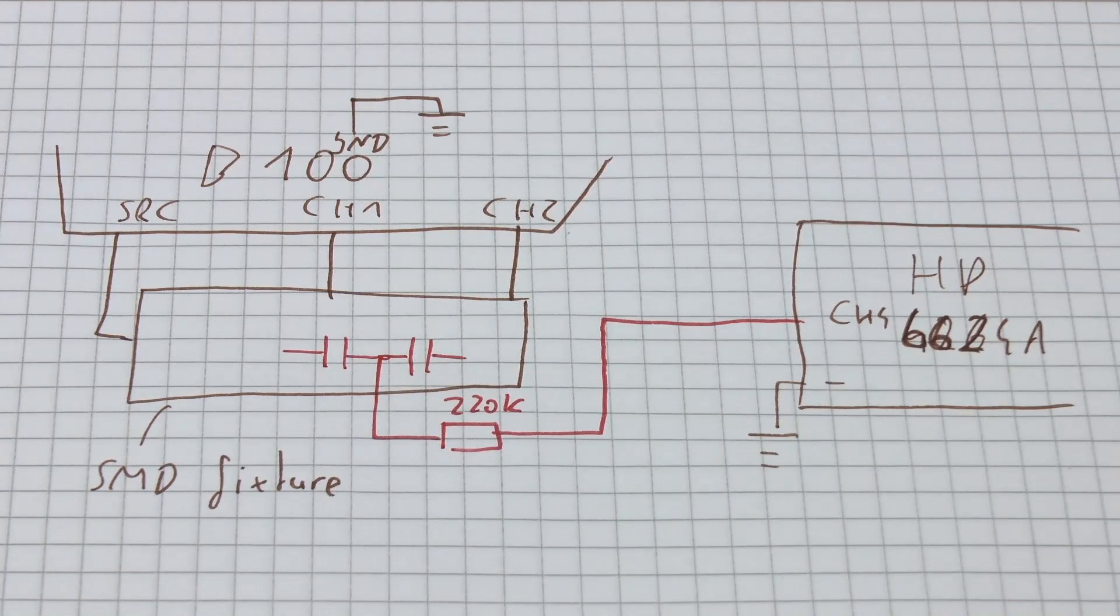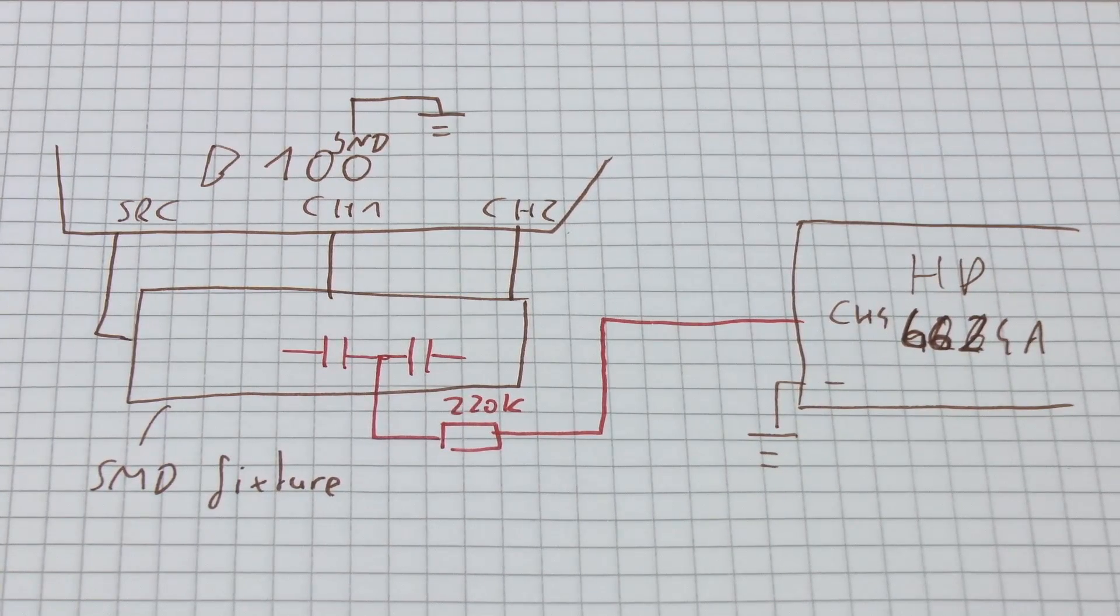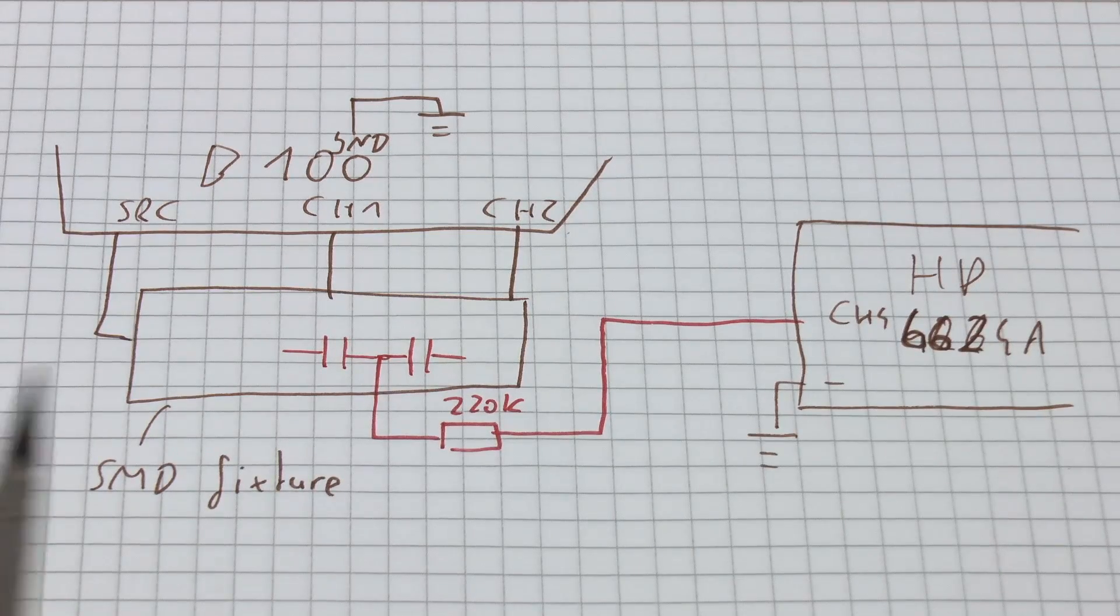However, there is a small problem, namely that the Bode 100 does not have the ability to generate a bias voltage. In theory, we could use an injection transformer, but this is quite expensive. So alternatively, we're going to use this circuit.